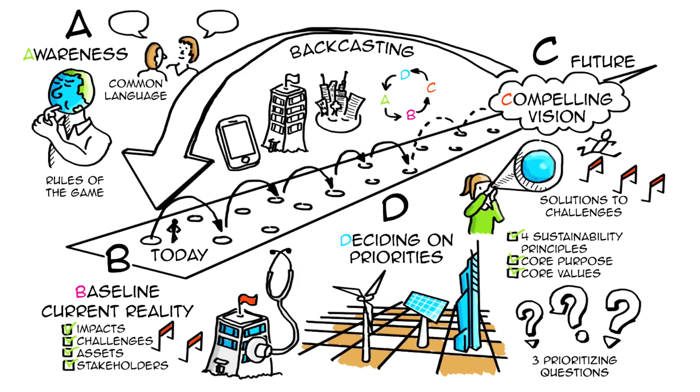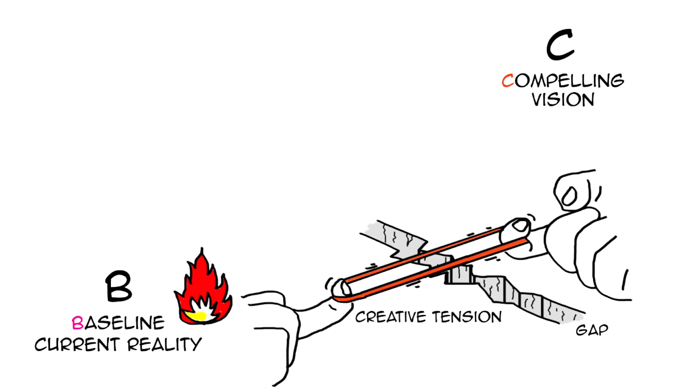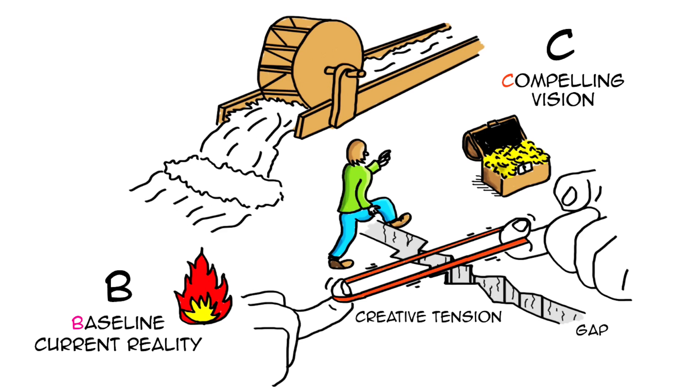Applying this A, B, C, D planning methodology many times with businesses and communities, I have found that the most important element is the gap between our current situation and our vision. Because that's what creates the creative tension. A lot of the time when we know where we are and where we want to be, we just go there.